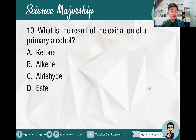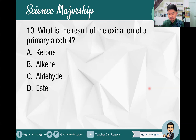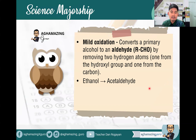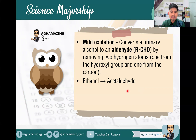Item number ten, our last item: what is the result of the oxidation of a primary alcohol? A. Ketone, B. Alkene, C. Aldehyde, or D. Ester. The answer is letter C — aldehyde. Mild oxidation converts a primary alcohol to an aldehyde (RCHO) by removing two hydrogen atoms — one from the hydroxyl group and one from the carbon. For example, ethanol is converted to acetaldehyde.